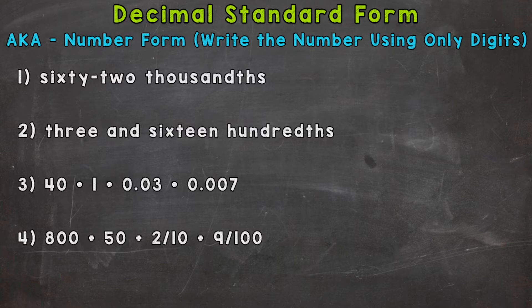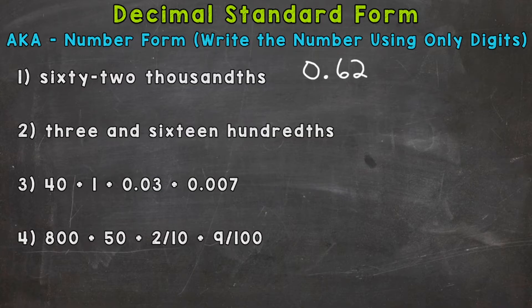Number one: we have 62 thousandths. The most important thing here is making sure the 62 is in the right places — the six and the two. We do not have a whole number portion of this decimal, so we know we have a zero and then a decimal. If we were to just write 62, this is the most common mistake. This would actually be 62 hundredths because it's ending in the hundredths.